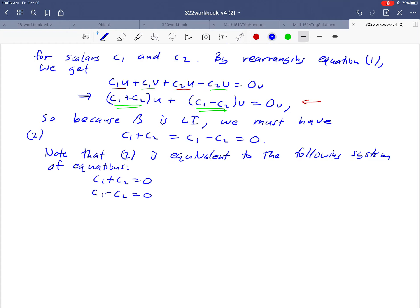Adding the equations yields 2c₁ = 0—that's what we get if we add these two terms, and the c₂ terms cancel out. So we just get zero, and on the right, zero plus zero is zero. But if 2c₁ = 0, then c₁ = 0.